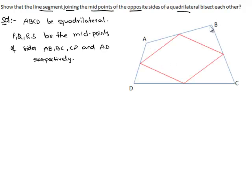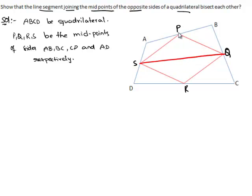According to the problem, we have a quadrilateral ABCD, and we are given the midpoints. So we take P as the midpoint of AB, Q as the midpoint of BC, R as the midpoint of CD, and S as the midpoint of AD. We have to prove that the line segments PR and SQ bisect each other.